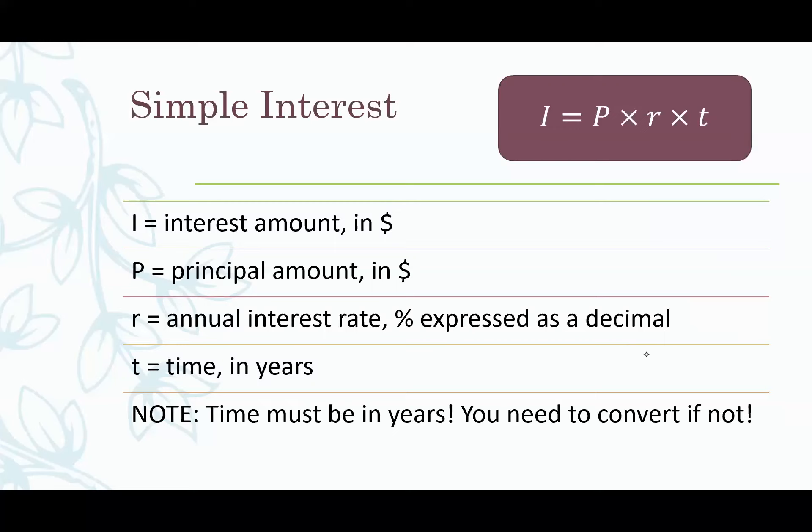R represents the rate, the interest rate, and because interest rates are given in a percent, when you put it in the formula you express it as a decimal. So if it's 10% then it's 0.1 in the formula. If it's 5% then it's 0.05 when you put it in the formula.